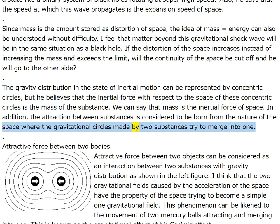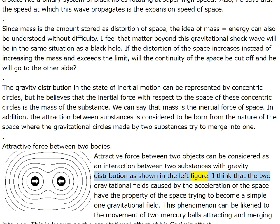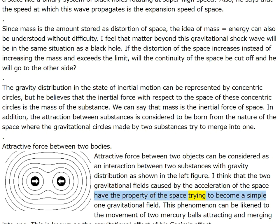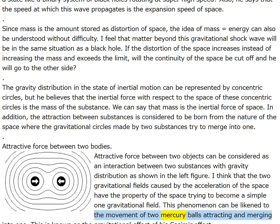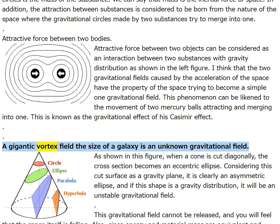The attraction between substances is born from the nature of space — the gravitational circles made by two substances try to merge into one. Attractive force between two objects can be considered as an interaction between two substances: the two gravitational fields have the property of trying to become a single gravitational field, like two mercury balls attracting and merging into one. This is known as the Casimir effect. A gigantic vortex field the size of a galaxy is an unknown gravitational field.